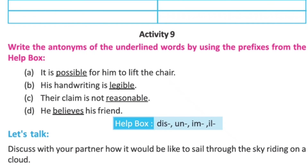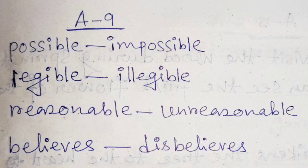Activity 9b: Find the antonyms of the underlined words by using prefixes from the help box. You add a prefix to form the opposite word. Examples: possible → impossible; legible → illegible; reasonable → unreasonable; belief → disbelief.